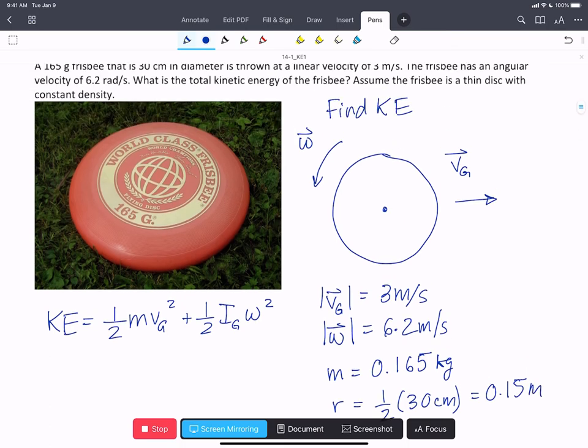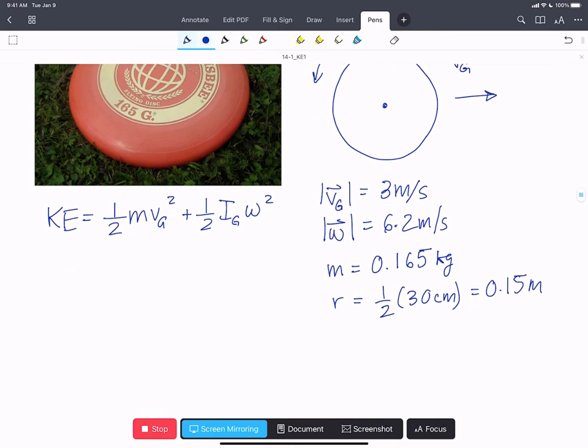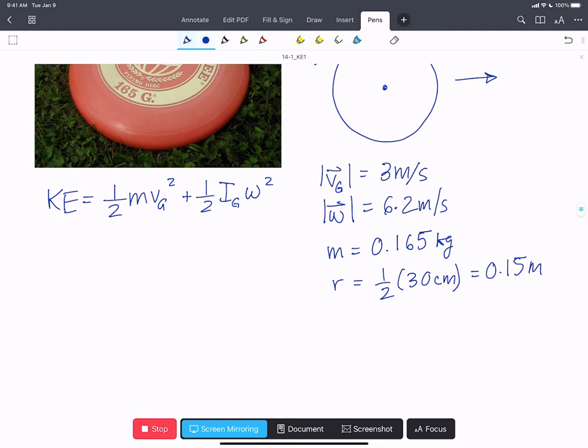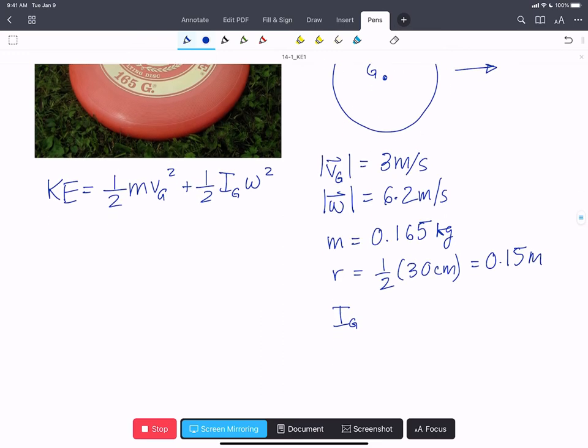We're also told that the frisbee is a thin disk with constant density. So if we look in our mass moment of inertia tables, we can find an expression about the center of gravity for the mass moment of inertia of a thin disk, and we'll find that is one-half m r squared.